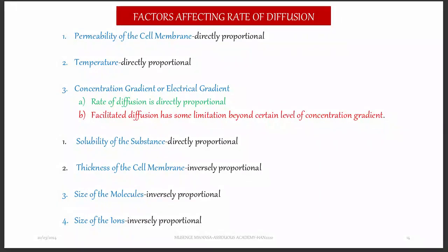There are different factors that affect the rate of diffusion, including permeability of the cell membrane — the more permeable, the faster things pass through. Temperature: if temperature is high, things pass through faster. Concentration gradient also matters. Substances more soluble to the cell membrane pass through faster — that is why oxygen and carbon dioxide pass through quickly. Substances which are small pass through faster than large ones.